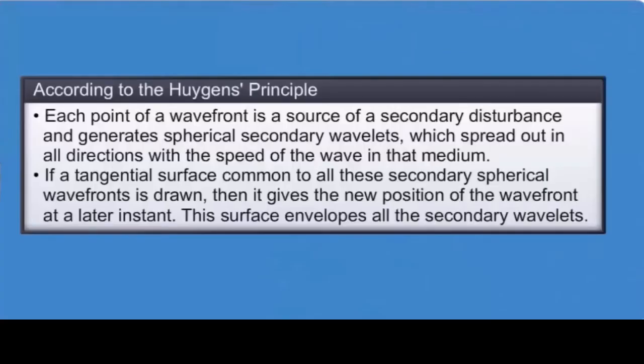According to Huygens Principle, each point of a wavefront is a source of a secondary disturbance and generates spherical secondary wavelets which spread out in all directions with the speed of the wave in that medium. If a tangential surface common to all these secondary spherical wavefronts is drawn, it gives the new position of the wavefront at a later instant. This surface envelopes all the secondary wavelets.